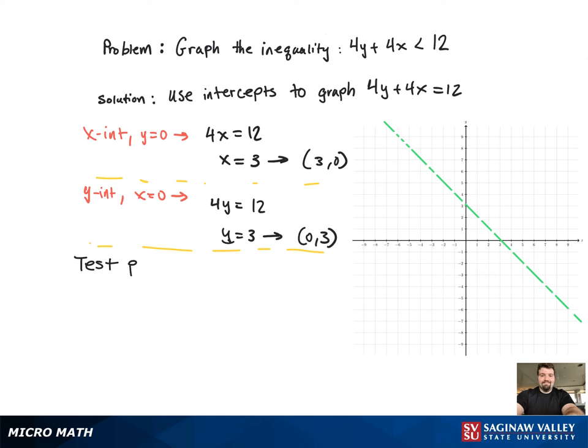Now we need to shade a region, either above the line or below the line. To figure that out, we're going to use a test point. An easy point to use is 0, 0. And we're going to plug that into the inequality. And when we do that, we get 0 less than 12, which is true, which means we're going to shade below the line. Because that's the region that has 0, 0.